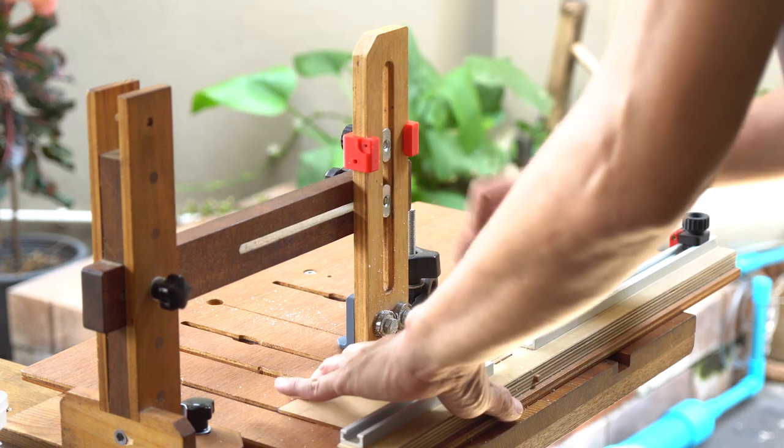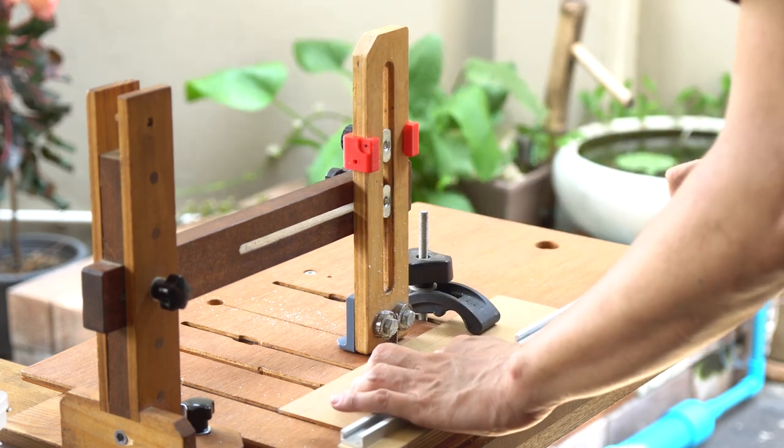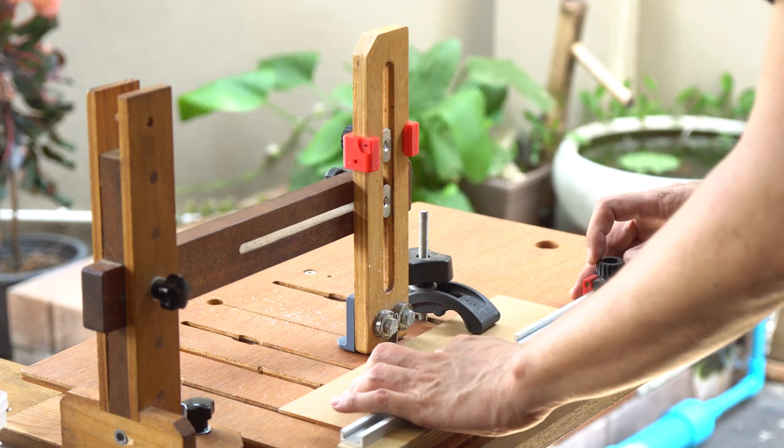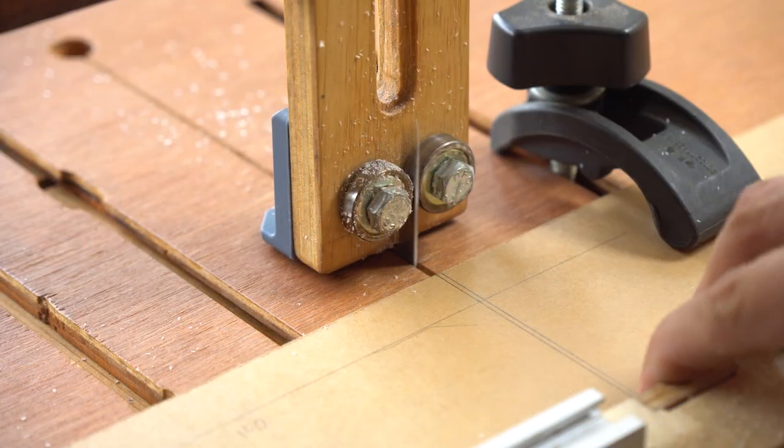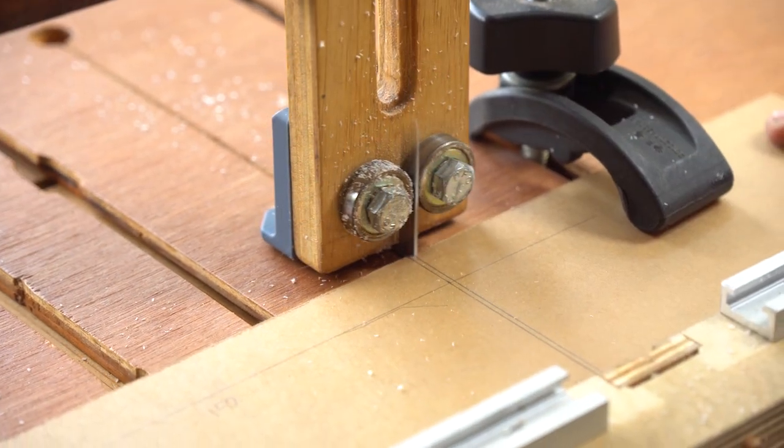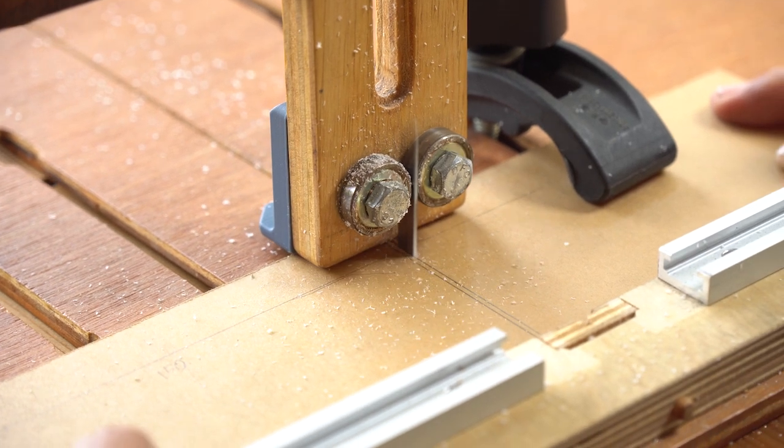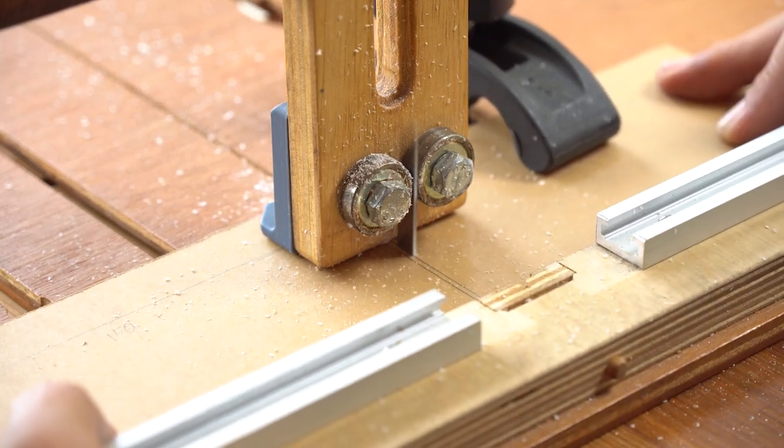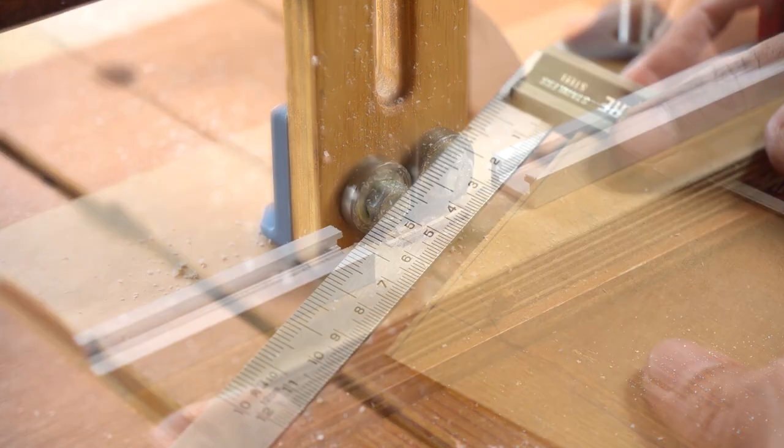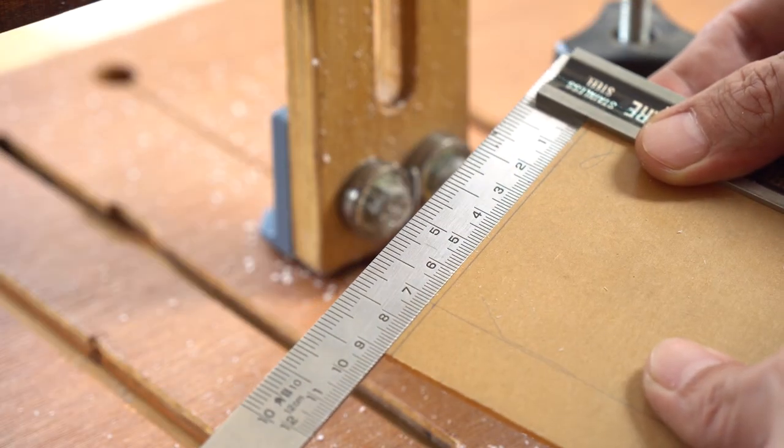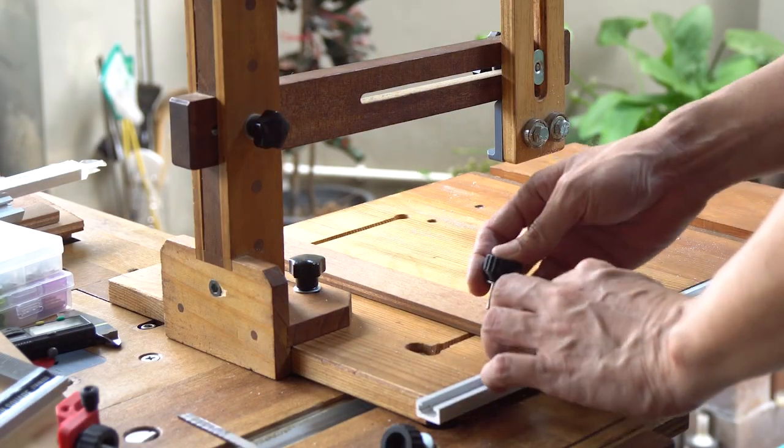To minimize material waste, I first crosscut to the length mark, then cut along the length of the plate to achieve the final width.